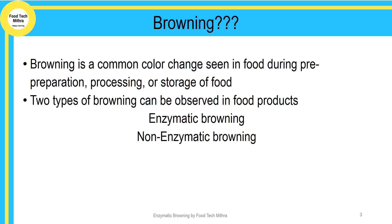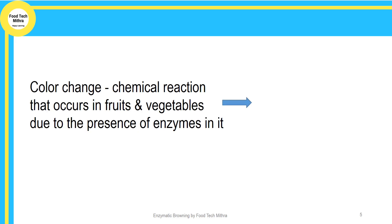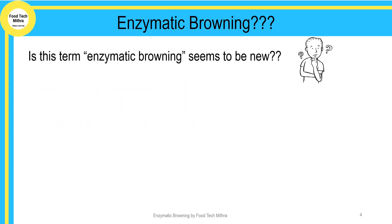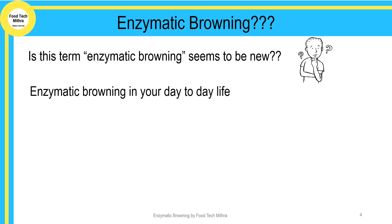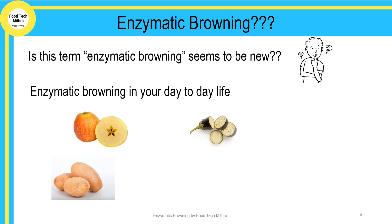In this video we are going to deal with enzymatic browning. If a product is cut and kept open for some period, you can notice a brown color on the cut surface. This formation of brown color is due to a chemical reaction that commonly occurs in fruits and vegetables due to the presence of enzymes. This is called enzymatic browning. You would have come across this in your day-to-day life — for example, with apple, pear, plantain, potato, and eggplant.